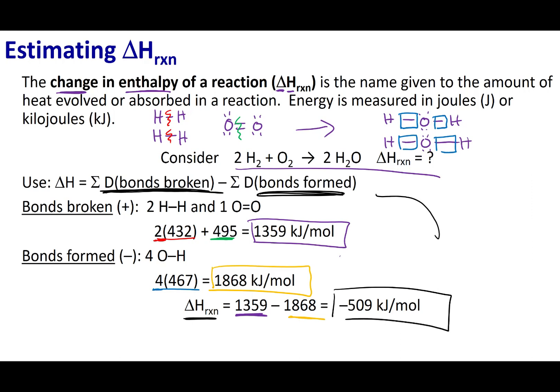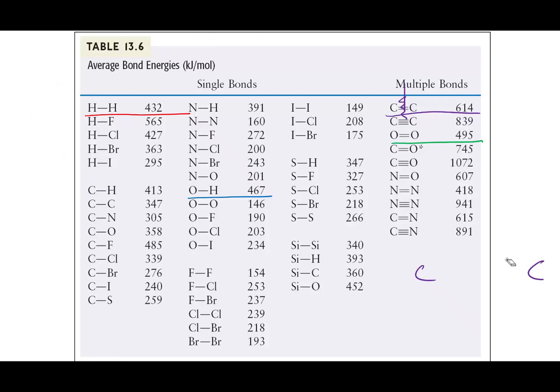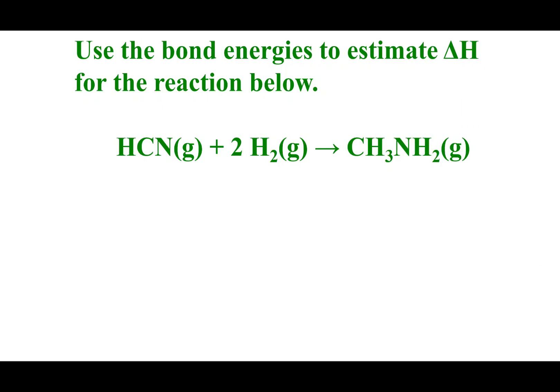For your exam, I'll give you a table of values and you are expected to calculate the delta H of reaction. Now let's practice: determine the change in enthalpy for the given reaction. Draw Lewis dot structures and use the bond energy table. After you're done, mark the right answer.